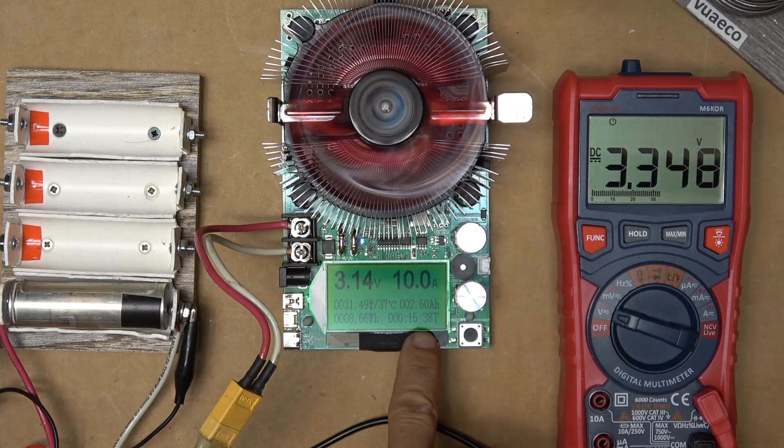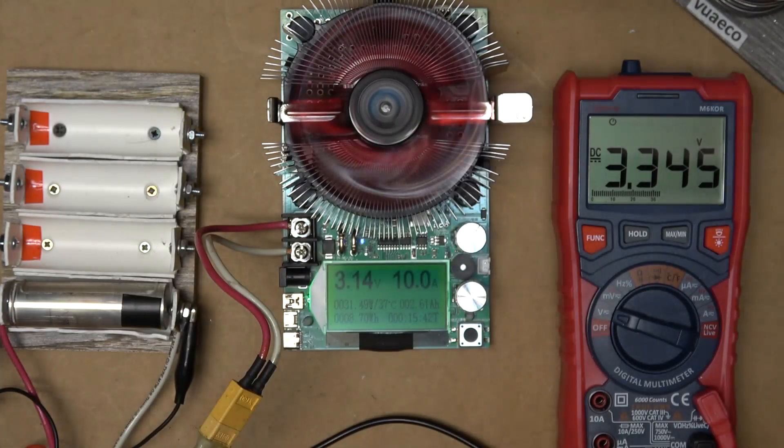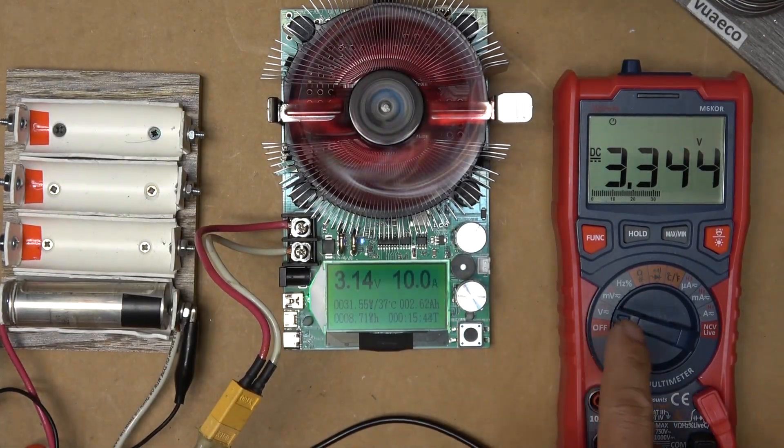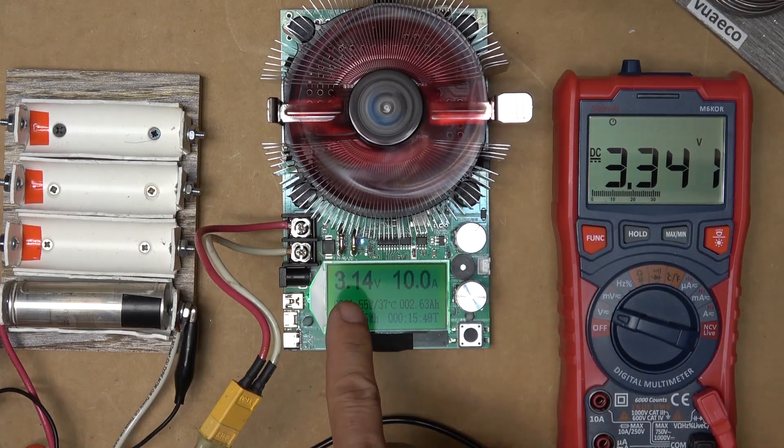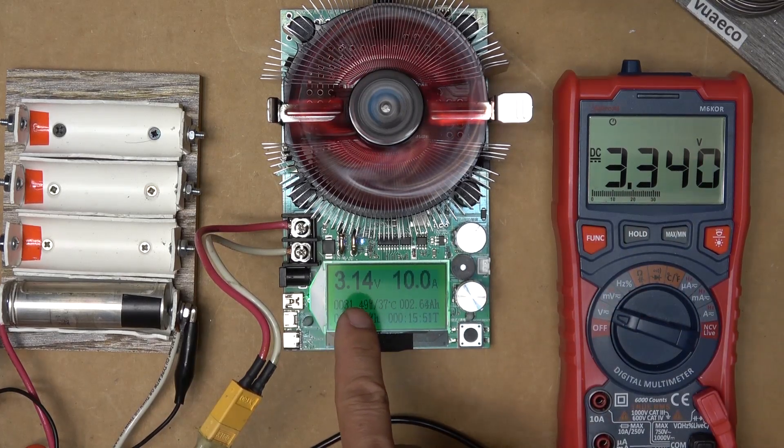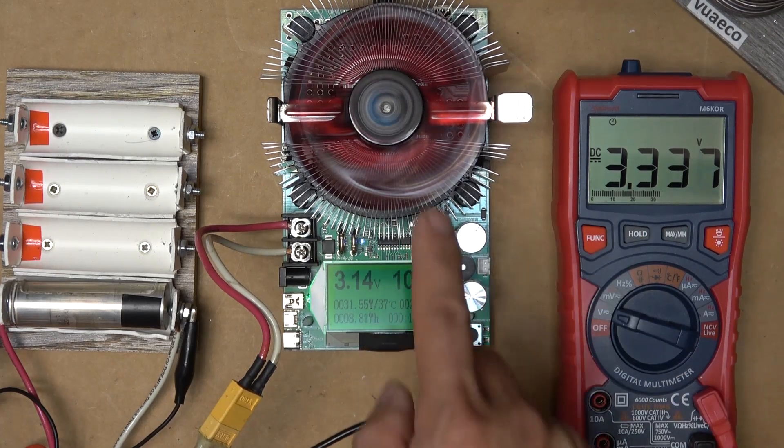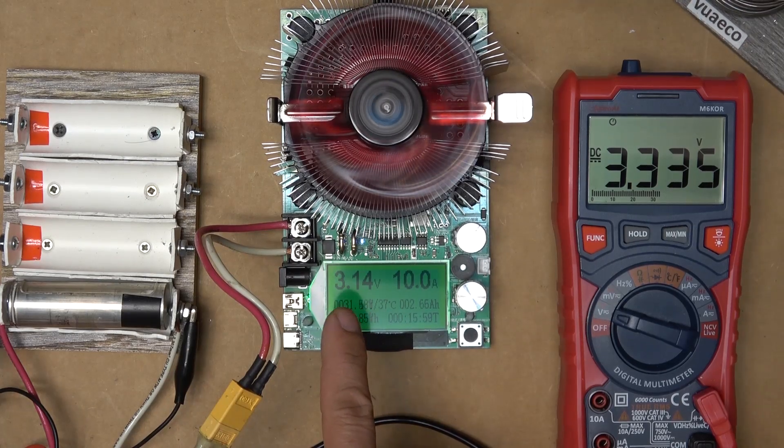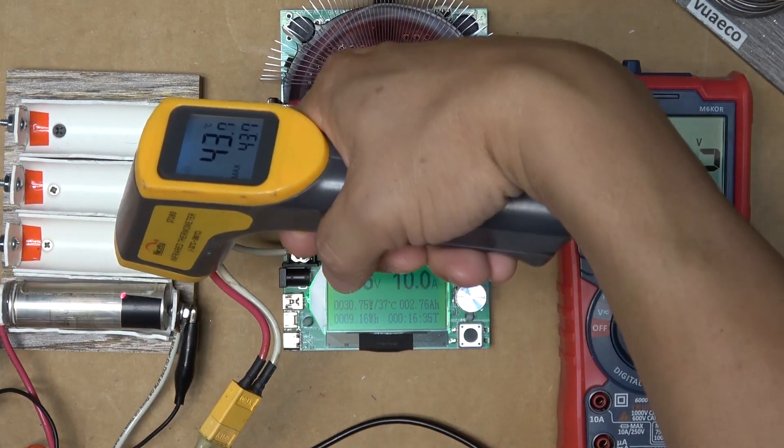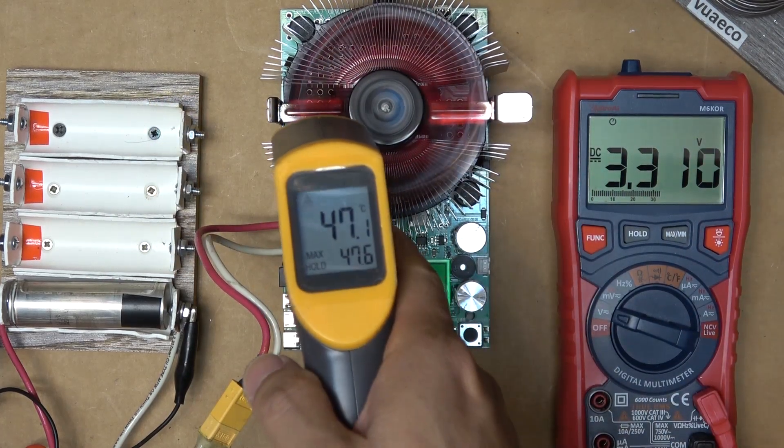We have about 15 minutes mark and about halfway done. The voltage on the voltmeter, 3.34 volts. On this testing device, 3.14 volts. So there's a huge difference when it's doing the test. This is not very accurate. And right now the battery is getting hot, 47 degrees Celsius.